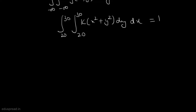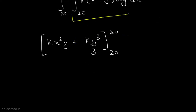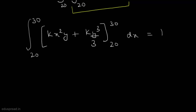We write the double integral of k(x² + y²) dy from 20 to 30, then integrate again from 20 to 30 over x, and this should equal 1. First, integrating with respect to y gives kx²y + ky³/3, evaluated from y = 20 to y = 30.